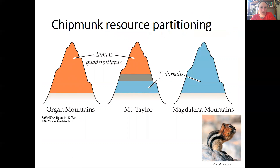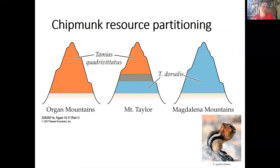The last example from the book covers chipmunk resource partitioning. Different chipmunk species dominate different mountains — Tamias quadrivittatus in the Oregon mountains and Tamias dorsalis in the Magdalena mountains, each taking up the whole region when in isolation. But when both species are present on a single mountain like Mount Taylor, they partition resources, creating distinct zones for each species rather than mixing. They're keeping their populations separate through resource partitioning rather than exploitation competition.